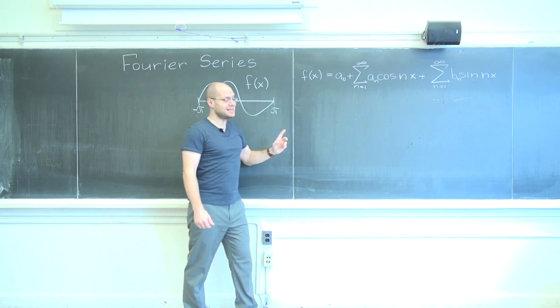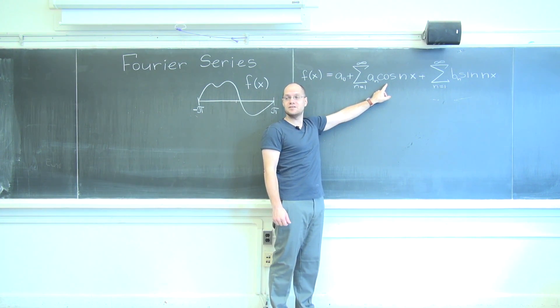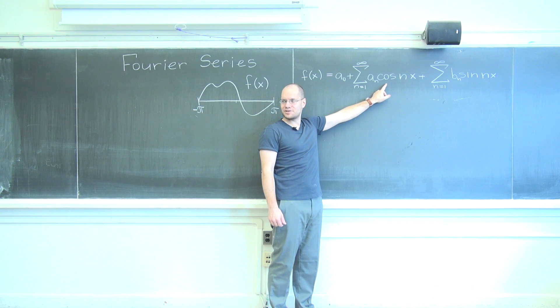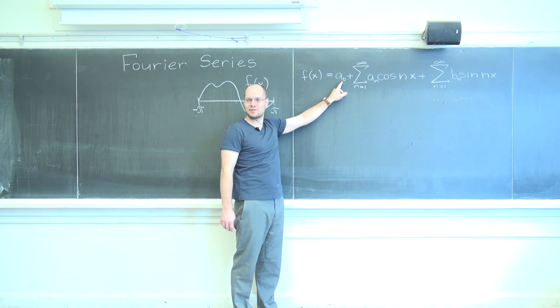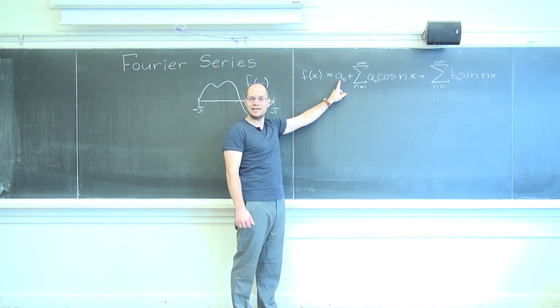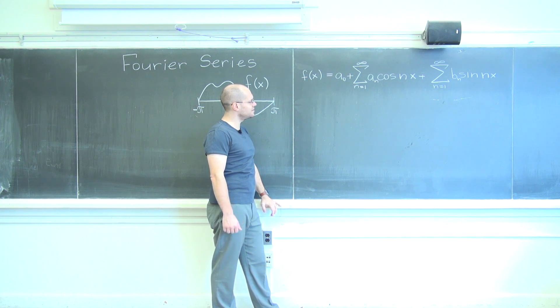And you could have said, well, you could just consider cosines of 0x, and that's like a constant, right? But there is a nice reason why you want to take it out separately, because the formula will be slightly different for a0 compared to all the other a's.